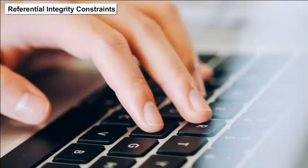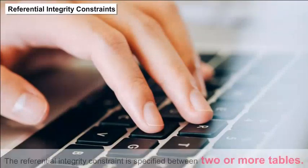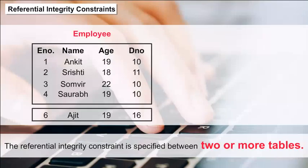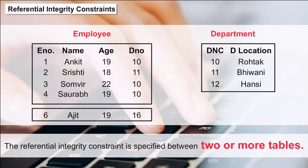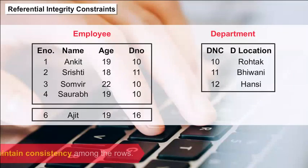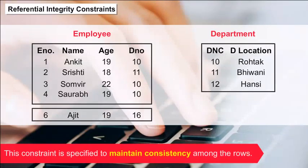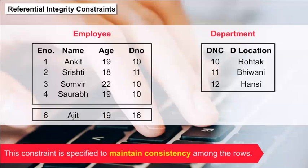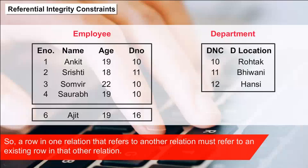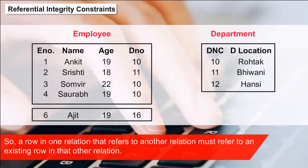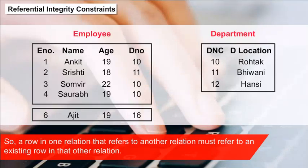Referential Integrity Constraints — the referential integrity constraint is specified between two or more tables. These constraints are specified to maintain consistency among the rows. A row in one relation that refers to another relation must refer to an existing row in that other relation.